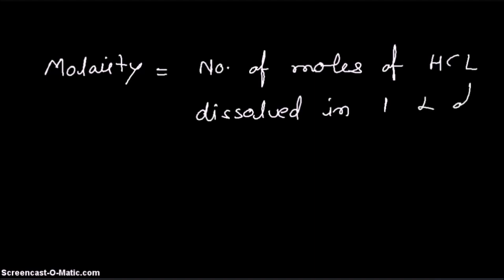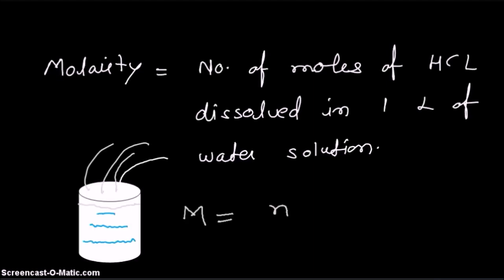At room temperature, hydrochloric acid is a gas. So let us write the formula: M = N / V, where M is molarity, N is number of moles, and V is volume of the solution.